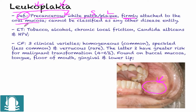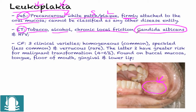The etiology of leukoplakia includes tobacco (smoking), alcohol, chronic local friction — for example from a denture or an orthodontic appliance rubbing in that area chronically — Candida albicans (a fungal infection), and the human papillomavirus. These are all etiological factors that can be related to this disease.